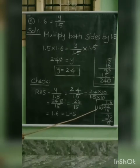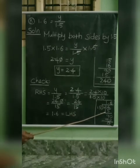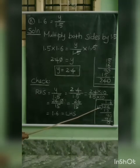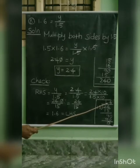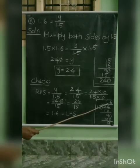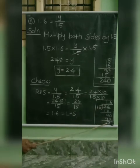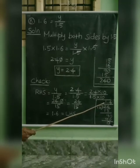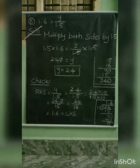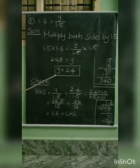Now divide 24 by 15. 1 times 15 is 15; the remainder is 9. You cannot divide 9 by 15, so put a decimal point in the quotient and add a zero to get 90. Divide 90 by 15: the answer is 6, since 6 times 15 is 90. Remainder is 0. So the quotient is 1.6. Since 1.6 is the LHS of the given equation, the variable value y equal to 2.4 is the correct answer.